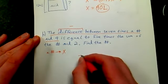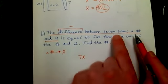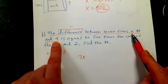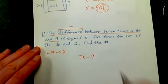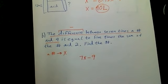Well, that's going to be 7X. So 7X is seven times a number. But it's the difference between that and nine. The difference between 7X and nine - that is the underlined part I have right here.